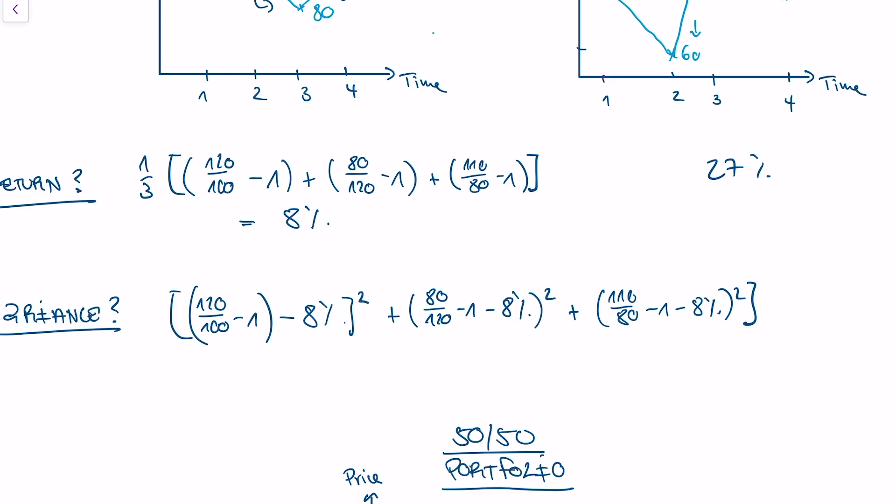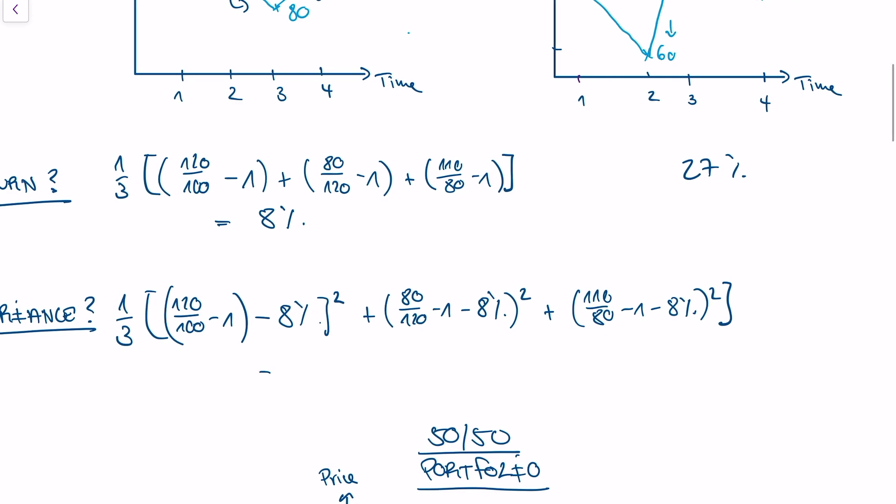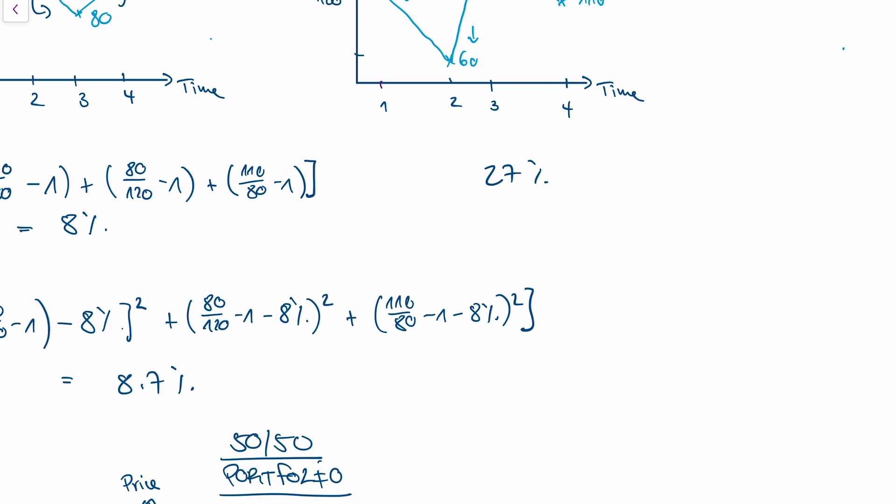And because we calculate variance, which is the average square deviation from the mean, we need to take an average, so one-third, because we have 3 jumps. And from this formula, we get that Tesla has a variance of 8.7%, and Siemens has a variance of 75%.